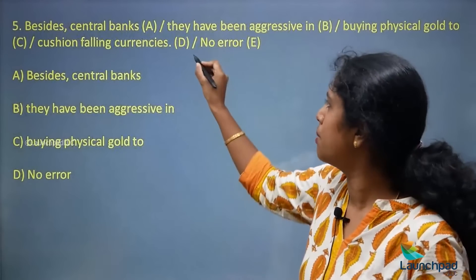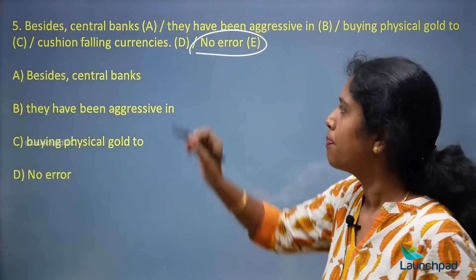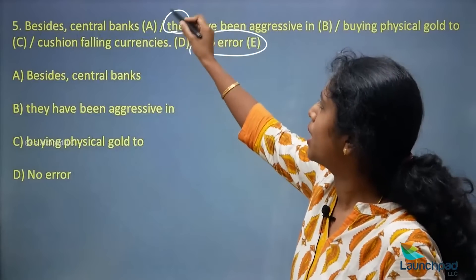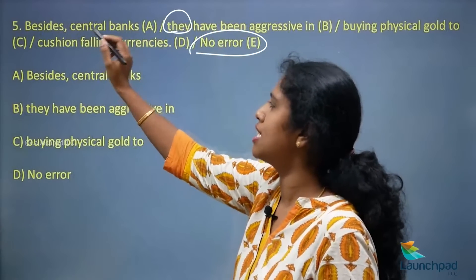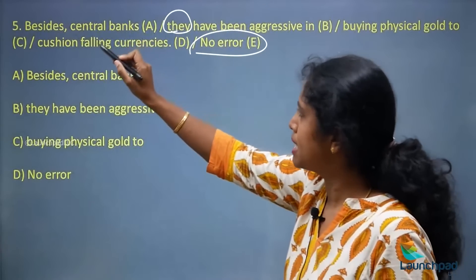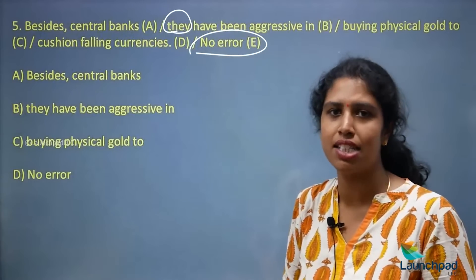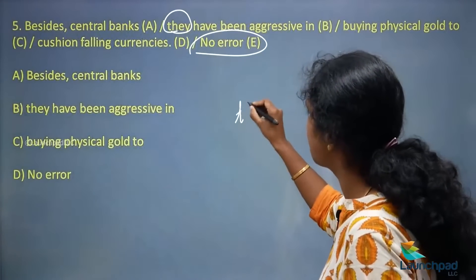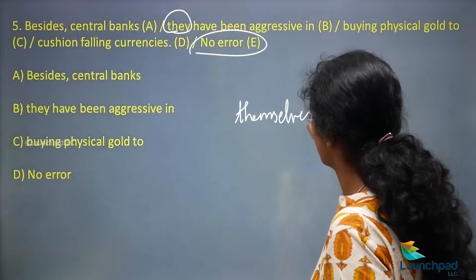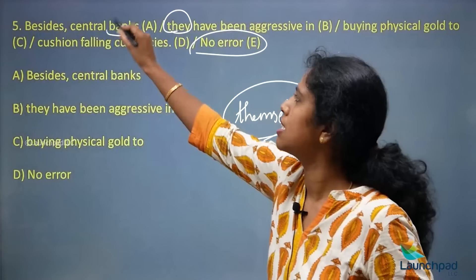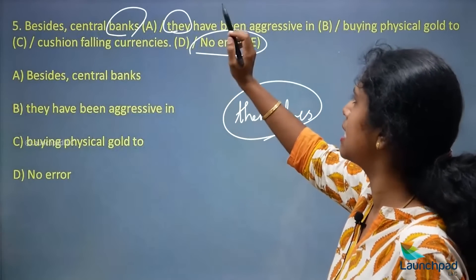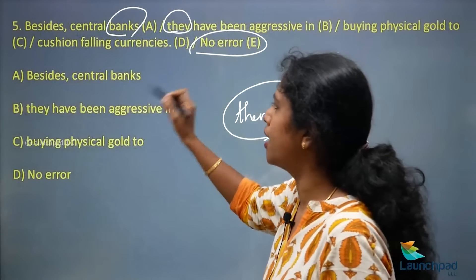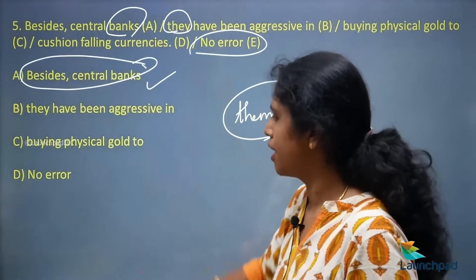We have the pronoun 'they,' but when you look at the subject — 'besides central banks' — you need to use a reflexive pronoun. So 'they' becomes 'themselves' because it is in plural form. The correct sentence is: 'Besides central banks, themselves have been aggressive in buying physical gold to cushion falling currencies.' Your option A is the right answer.